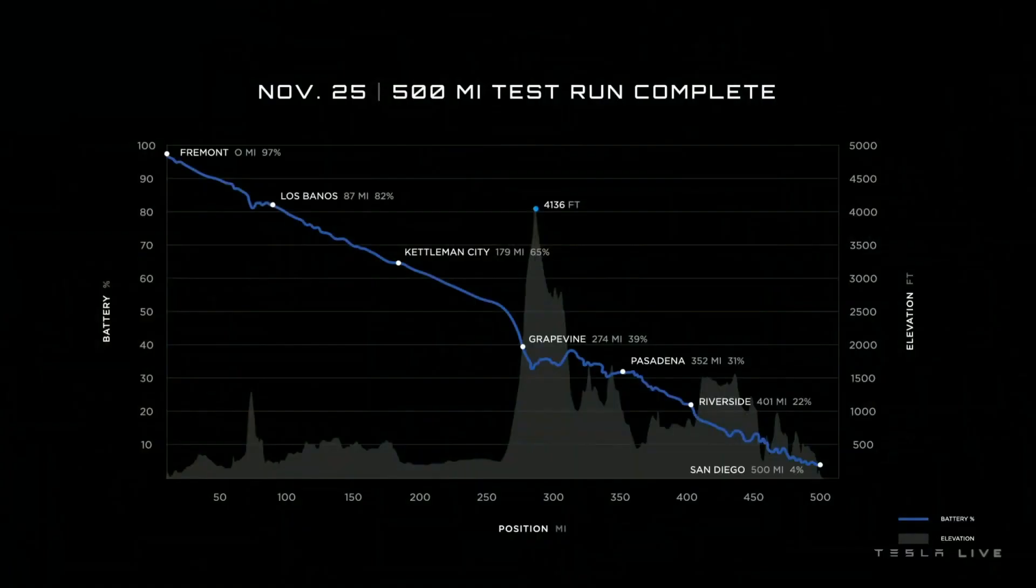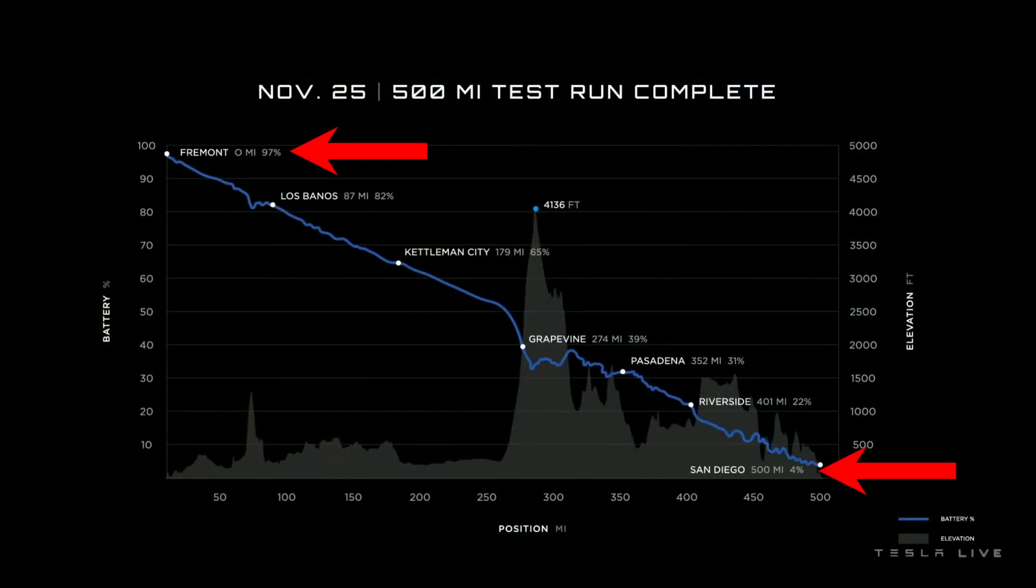Tesla has made some bold claims about their new semi-truck, and today we're going to test those. In a recent event where Tesla announced the first deliveries of their semi-truck, they claimed to make a 500-mile trip from Fremont to San Diego, California, where they only used about 93% of the battery capacity.